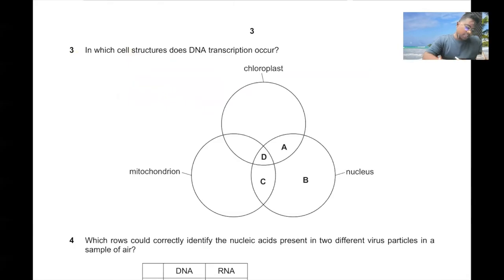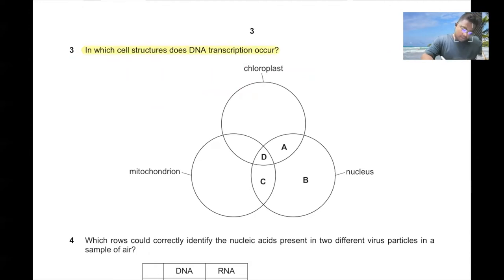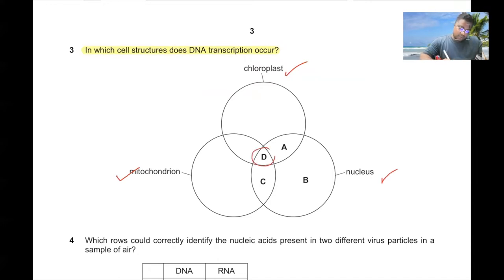Question number three. In which cell structure does DNA transcription occur? DNA transcription occurs in the chloroplast, mitochondria, and nucleus. So the answer is D.